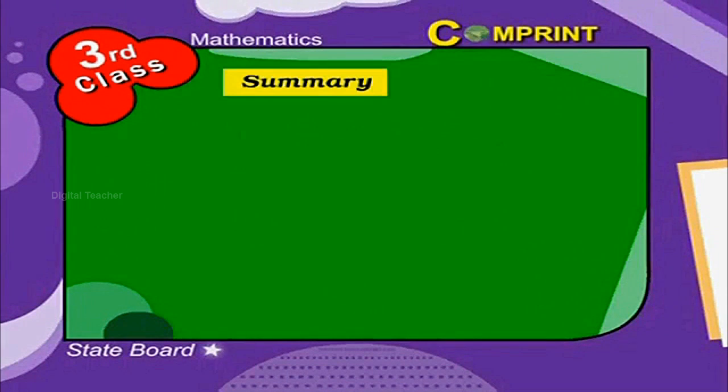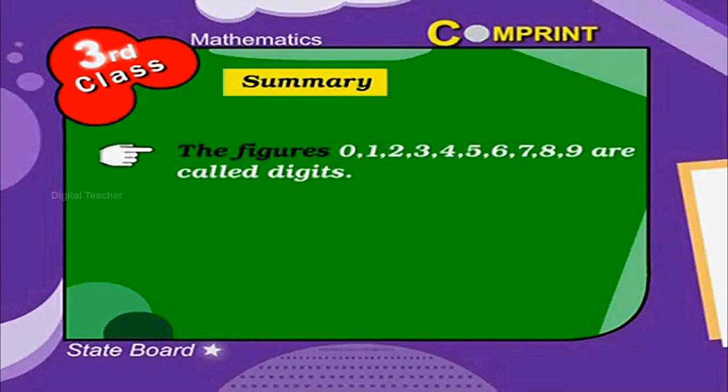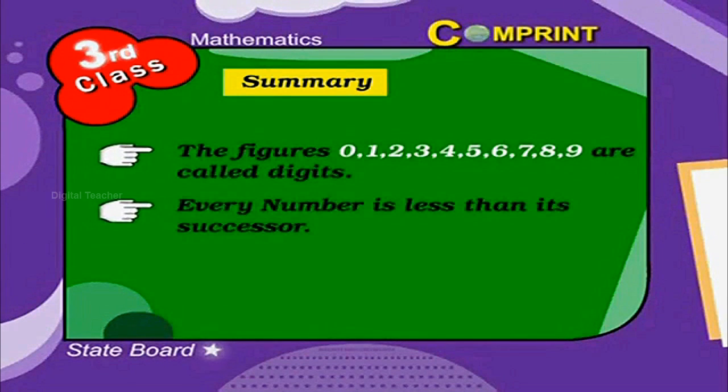Points to remember. The figures 0, 1, 2, 3, 4, 5, 6, 7, 8, and 9 are called digits. Every number is less than its successor.